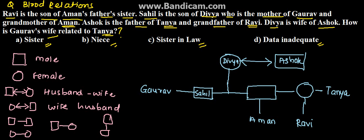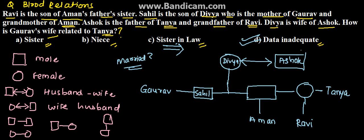So the answer would be option C, sister-in-law. But here is the confusing part — in the question they have not mentioned whether Gaurav is married or not. If he is married, the relationship between them would be sister-in-law. But since they have not mentioned that Gaurav is married or unmarried, we can say that option D, data inadequate, is the solution for the given problem.